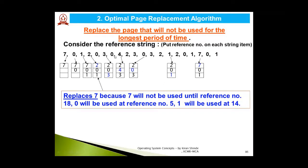Continuing the forward scan, page 1 appears before page 7. So comparing 7, 0, and 1 — page 7 will be used after the longest period of time. Therefore, page 7 is the victim page and is replaced by page 2. Moving further, page 0 is already present, so no replacement. For page 3, compare {2, 0, 1}: scanning forward, page 0 is used immediately, then page 2, leaving page 1 as the one used latest. So page 1 is the victim page.